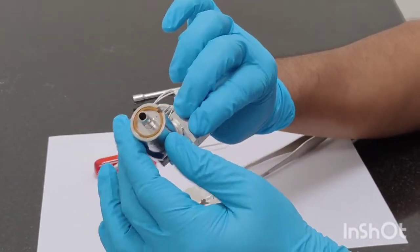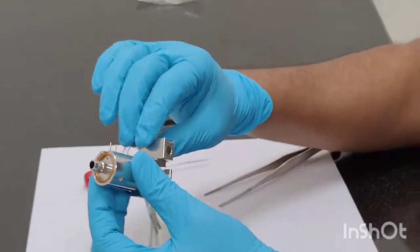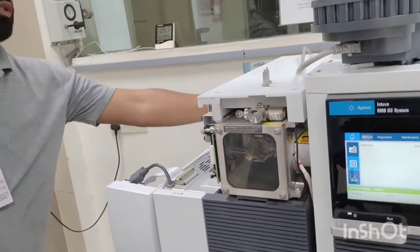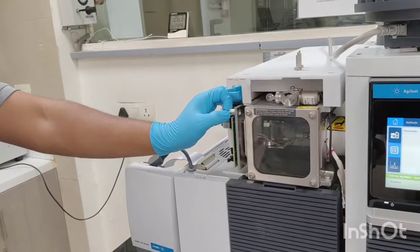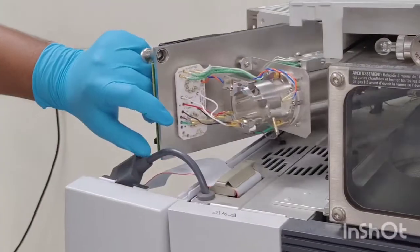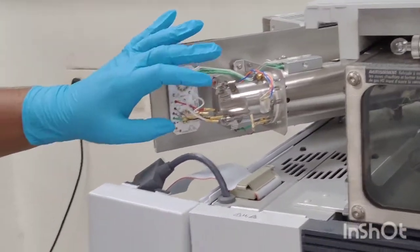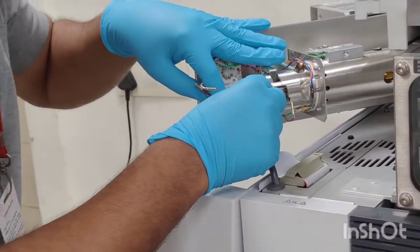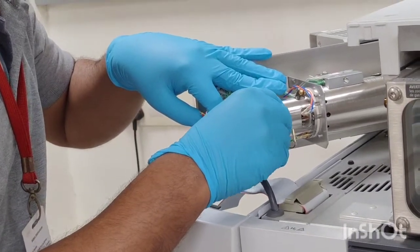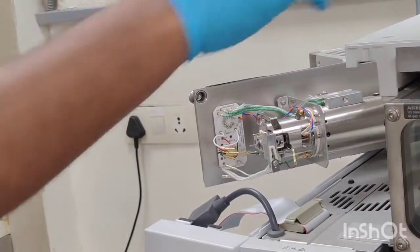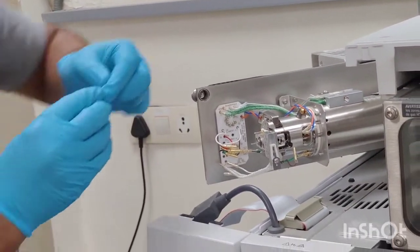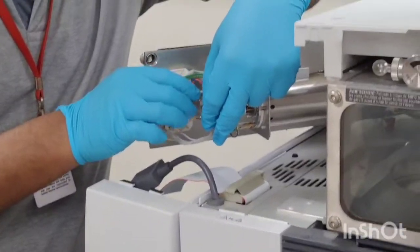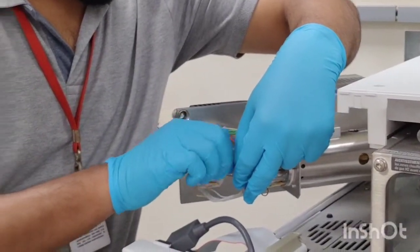Now the ion source is ready to be fixed in the MS part and we will go back to the screw again, which the screw is already open and opening this part. Then you can see we can fix the ion source like this. When it is properly fixed, take these two screws. There is no need to use any screwdriver here, just we need to hand dial it.